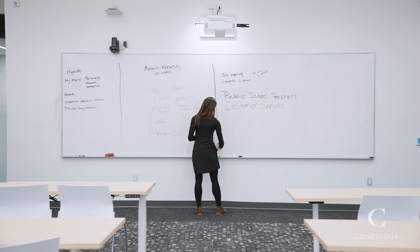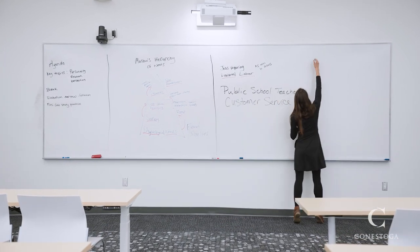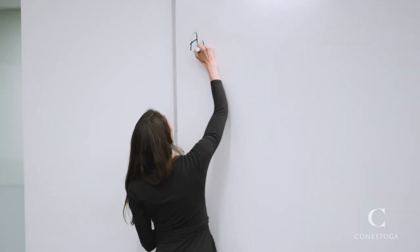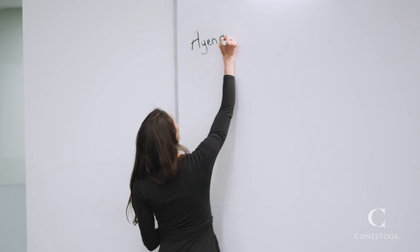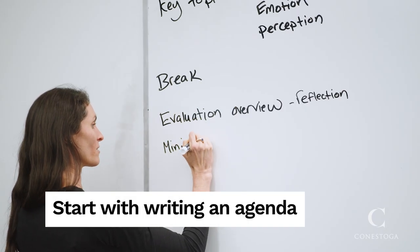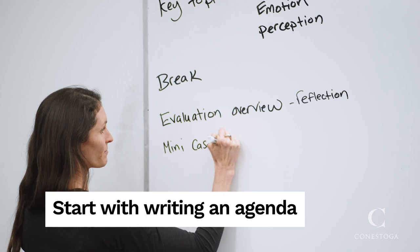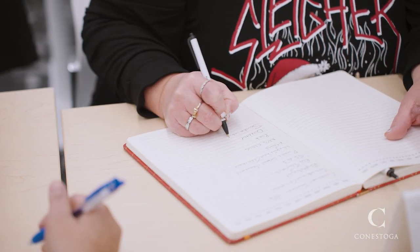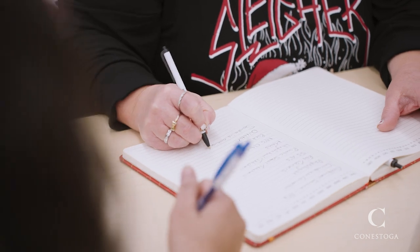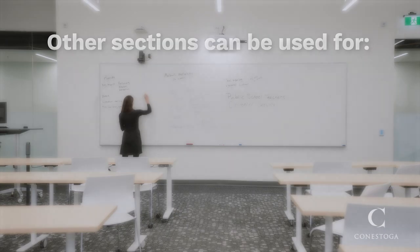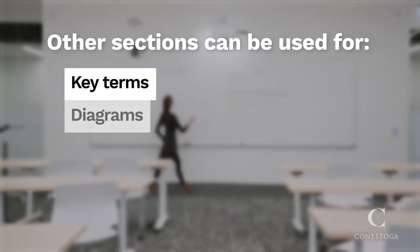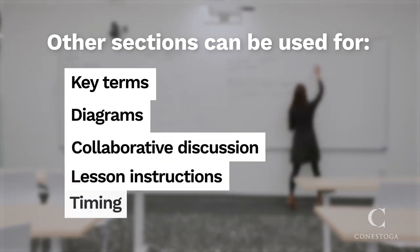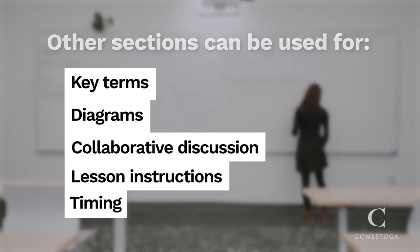Many faculty like to section off their whiteboard into three to four different areas. Choose a section of the board, typically to the side, to write the agenda that students can refer back to throughout class. This allows students to take stock of what's already been covered and what's coming next. Other sections can be used for key terms, diagrams, collaborative discussion, lesson instructions, and timing, or whatever you feel fits your teaching style.